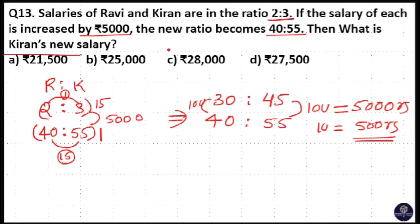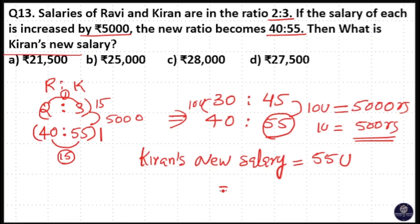That means Kiran's new salary. We have to find Kiran's new salary that is 55 unit. Kiran's new salary is equal to 55 unit. That means 55 into 500 is equal to 5 into 5, 25 to carry over, 5 into 5, 25 plus 2 is 27. So 27,500 rupees is Kiran's new salary. That is option D is your answer.